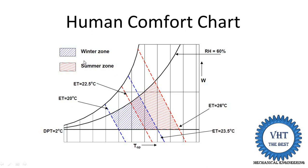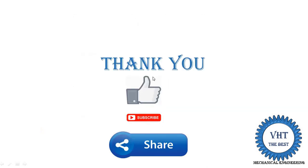The winter and summer zones overlap with each other between 22.5 and 23.5 degrees centigrade — a 1 degree effective temperature range. In this overlapping region, some people feel comfortable in both seasons, whether in winter or in summer.